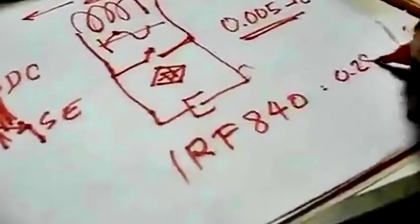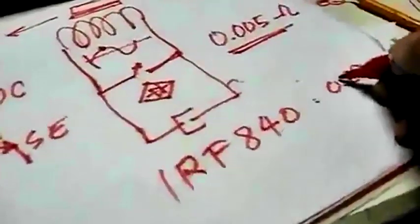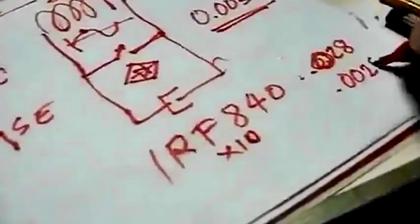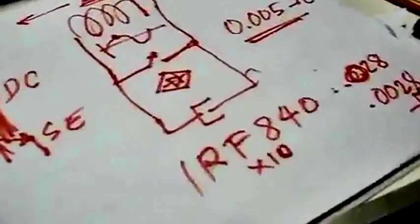What I'm using here is the IRF 840. The resistance is 0.028 ohms. So if you make it parallel times 10 — parallel 10x IRF 840 — you will end up with 0.0028 ohms. You just need a parallel circuit of these to achieve the lowest resistance to make this shorting possible.